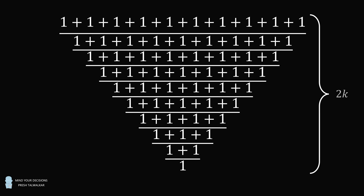Part 2: consider this type of fraction where we have an even number of rows. What will the fraction approximately be equal to if we let the number of rows go to infinity? Pause the video if you'd like to give this problem a try, and when you're ready, keep watching to learn how to solve this problem.